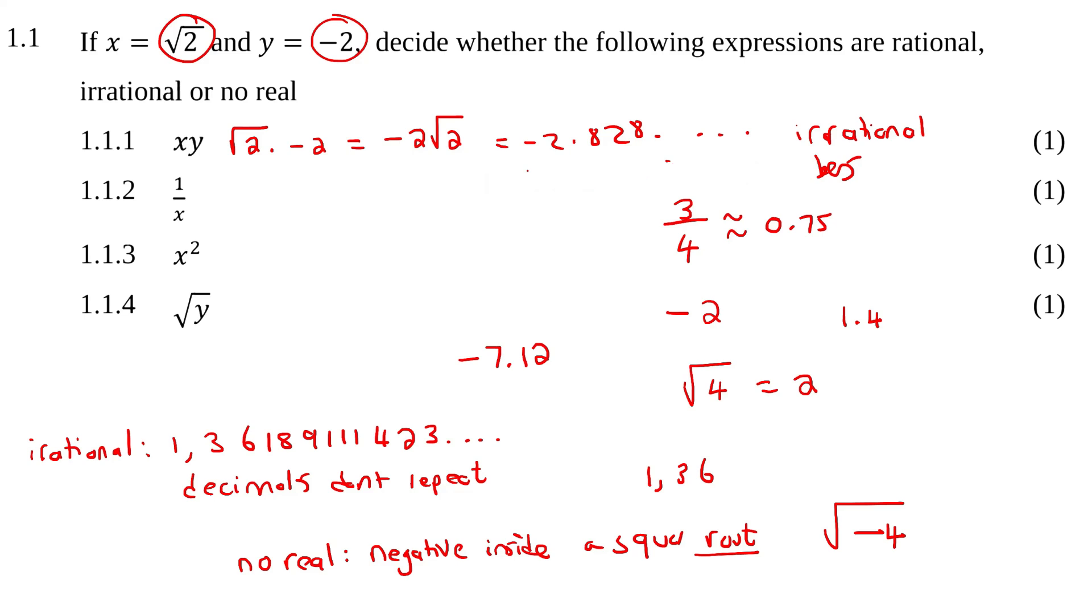Okay, the next one, let's have a look. So, 1 over x. So, 1 over square root 2, nothing wrong with that. Go type it on the calculator, and let's see if it gives us something nice. Oh, no, ugly, right? So, it's also ugly. So, we're going to say irrational. How do we spell irrational? Two r's, yeah.